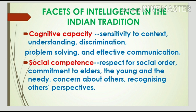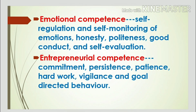The first facet is cognitive competence — sensitivity to context, understanding, discrimination, problem solving, and effective communication. One should understand things, solve problems, discriminate between right and wrong, and communicate effectively. The second facet is social competence — skill for respecting social order, commitment to elders, the young and the needy, concern for others, and recognizing others' perspectives. The third is emotional competence — self-regulation and self-monitoring of emotions, honesty, politeness, good conduct, and self-evaluation.